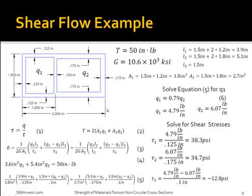Here is an example of using shear flow to find the maximum stress on the walls of the subsections. To find the shear flow, you have to derive a couple of equations — in this case, two equations, since there are two different shear flows. The first equation relates the shear flow to torque, which is equation 2. The second equation relates the shear flow to angle of twist, which is equation 3. Once you have derived these equations, you can solve for the shear flow. In this case, the shear flow in section 1 is 4.79 pounds per inch, and the shear flow in section 2 is 6.07 pounds per inch.